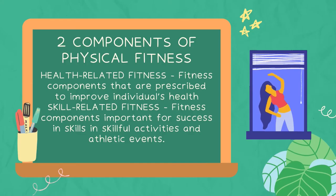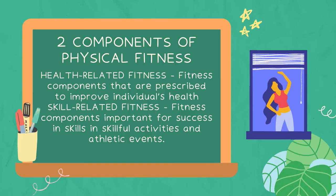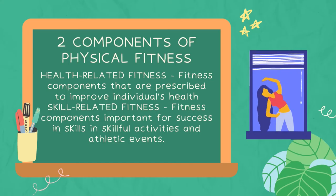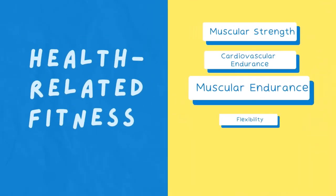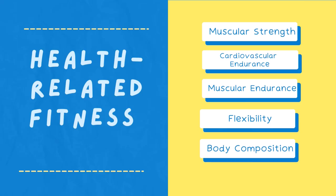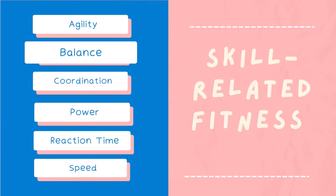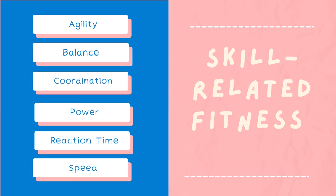Quick recap: Physical fitness involves two categories — health-related and skill-related components — which enable a person to cope with the requirements of daily living. Health-related components include cardiovascular endurance, stamina, muscular strength, muscular endurance, flexibility, and appropriate body mass index. Skill-related components are the physical abilities that show potential for good performance in certain skills, such as speed, agility, reaction time, balance, and coordination.